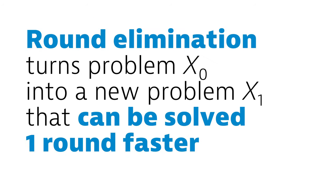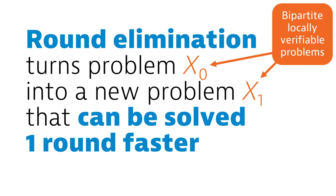So to recap, round elimination is a technique that turns a problem X0 into a new problem X1, that can be solved one round faster. It can only be used when a problem is in the right form. We must have a so-called bipartite, locally verifiable problem. Few problems are directly given in this form, but many problems can be turned into this form, and then round elimination works.